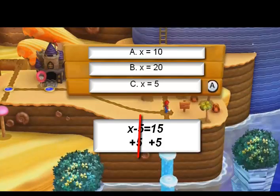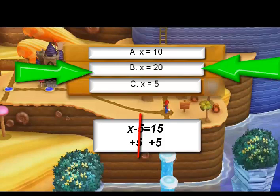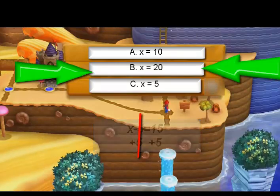You cancel out the negative 5 and 5. When 15 plus 5 equals b, which is 20.